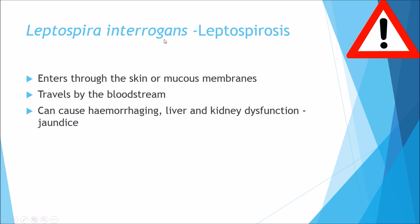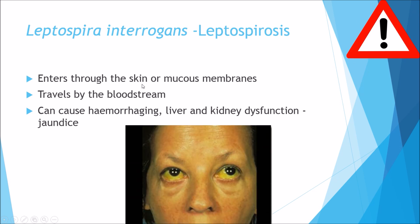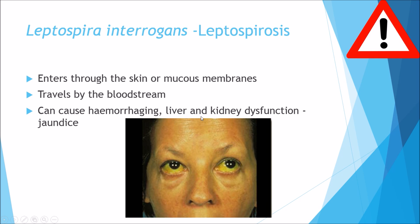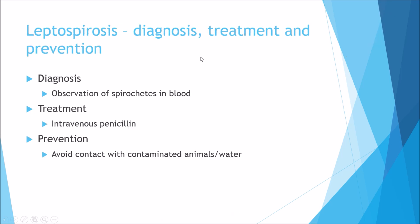Leptospira interrogans is the causative agent for leptospirosis. It enters through the skin or mucous membrane and travels via the bloodstream. As it travels around the body it can cause internal hemorrhaging, liver and kidney dysfunction, which eventually causes jaundice — where your skin turns yellow and your eyes turn dark yellow due to liver failure. For diagnosis, observation of spirochetes in the blood is used; treatment is with penicillin. To prevent it, avoid contact with contaminated animals and water — farmers in particular should be aware as they have constant contact with animals and their water systems.